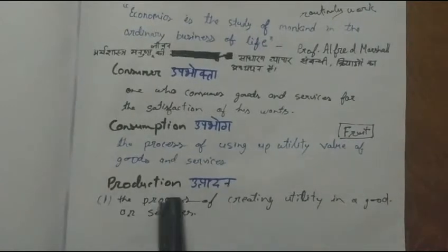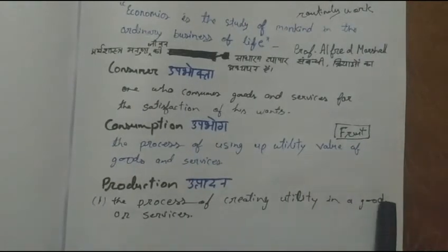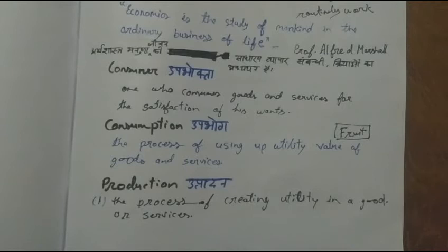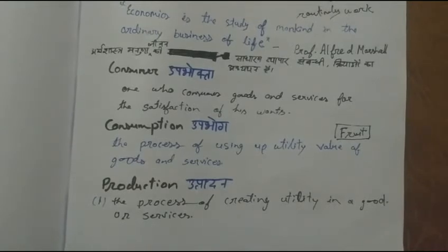The next activity is production. Production is the process of creating utility in a good or service. For example, if there is some wood and a person makes a chair from it, the chair has utility whereas the raw wood does not. Similarly, if we make bricks from earth, we have changed the form of earth into bricks, and bricks can be used — they have utility.